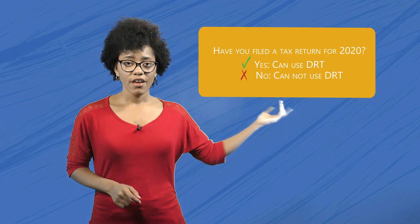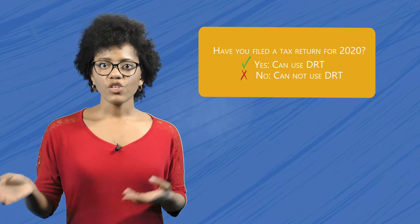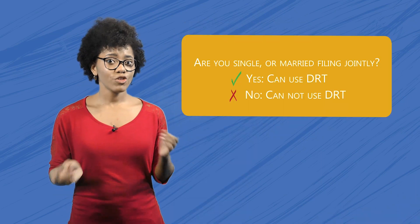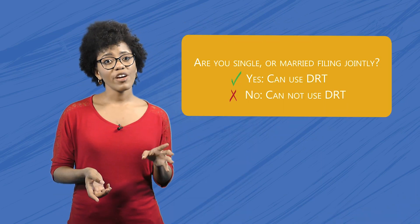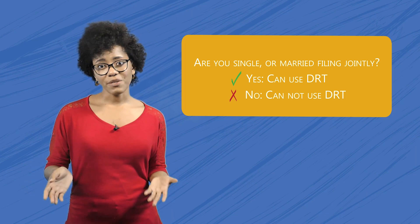Not everyone can use the DRT, though. At the beginning of the Financial Information section, you'll answer a few questions to see if it will work for you. The first question is: have you filed a tax return for this year? The DRT pulls data from your tax return that the IRS has on file, so if you haven't filed a return, you're out of luck. The next question is about your filing status. Are you single or married filing jointly? You can use the DRT. If you're married but filing separately from your spouse, or filing as head of household, you can't use the DRT.